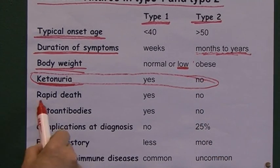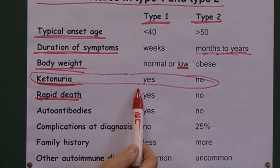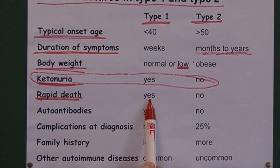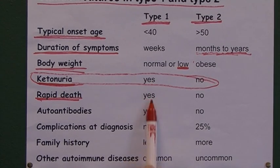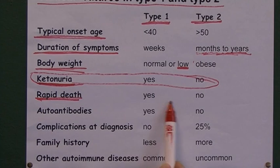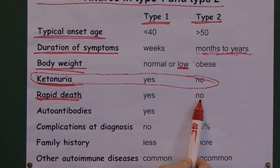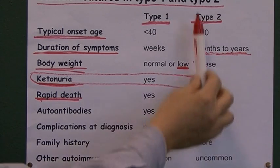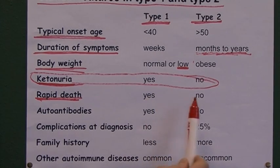Regarding rapid death without treatment: in type 1, these patients will probably die within a few months because they'll become ketoacidotic. Before insulin was available, type 1 diabetes was an automatic death sentence — typically a young person, often an adolescent or teenager, would present and die within a few months of diagnosis. With type 2, patients can go on for quite some time, and the cause of death is more likely to be complications of diabetes rather than diabetes itself.